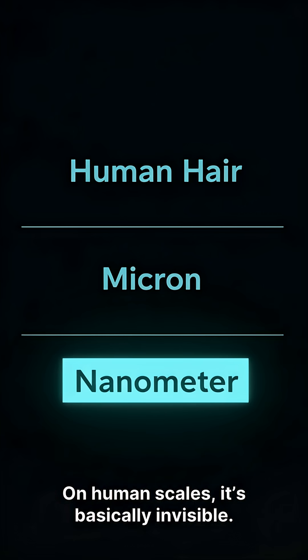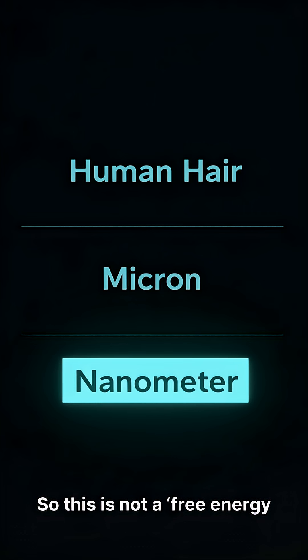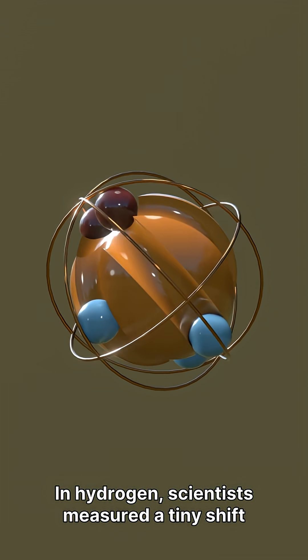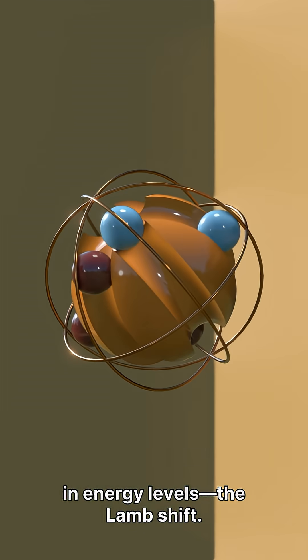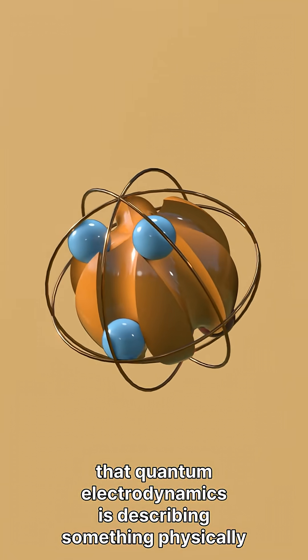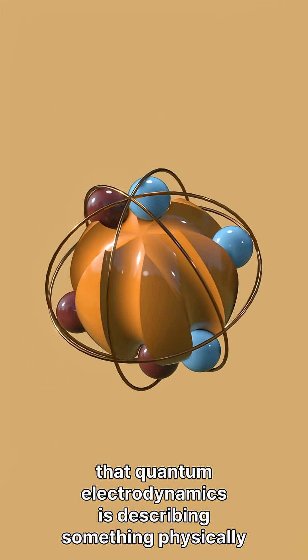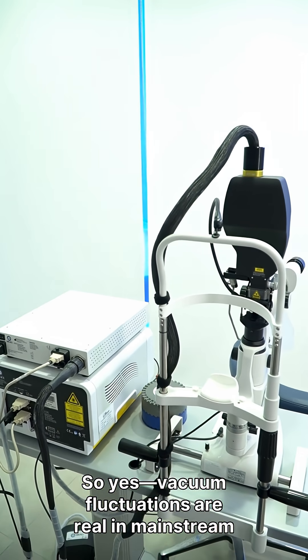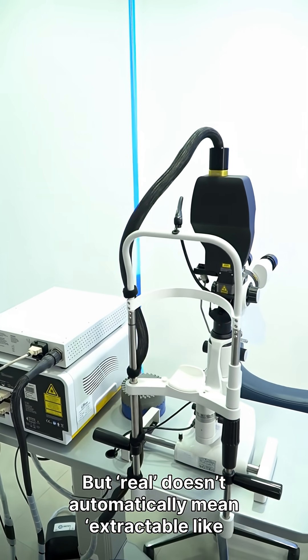On human scales, it's basically invisible. So this is not a free energy machine. And it's not just plates. In hydrogen, scientists measured a tiny shift in energy levels—the Lamb shift. It was one of the big reality checks that quantum electrodynamics is describing something physically real.